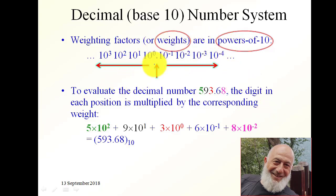To the left of the decimal point the weights are 10 to the power 0, 10 to the power 1 which is 10, 10 to the power 2 which is 100, and 10 to the power 3 which is 1,000, and so on.